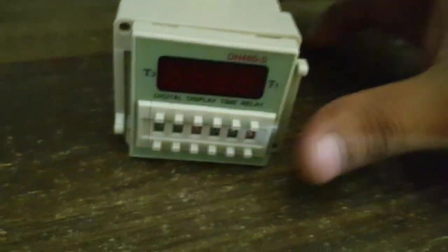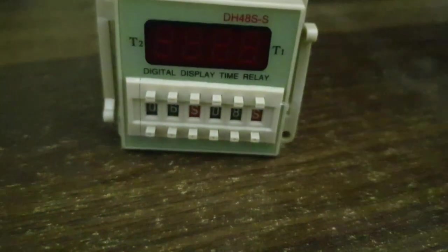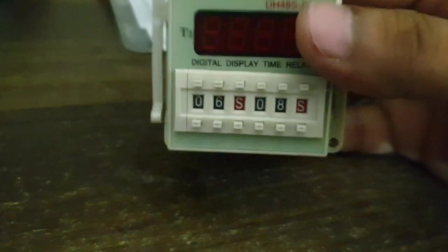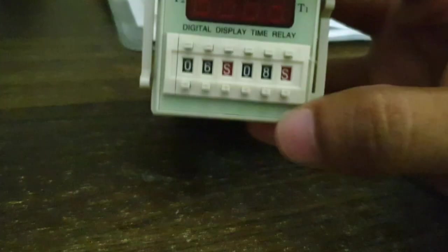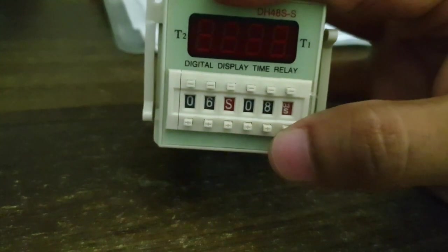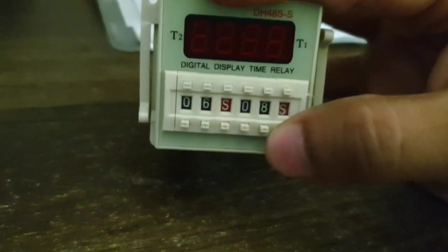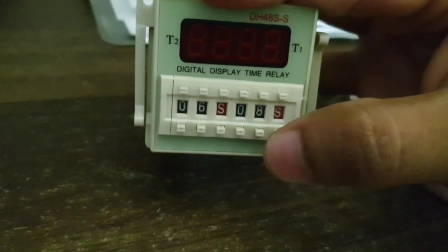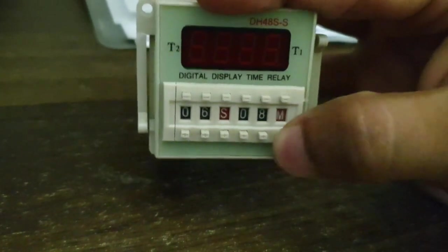The working of this relay is straightforward. You change the time with these buttons and change the scale using the red digits. I can set it to S which means seconds, 0.1 seconds, minutes, 0.1 minutes, and hours and minutes.